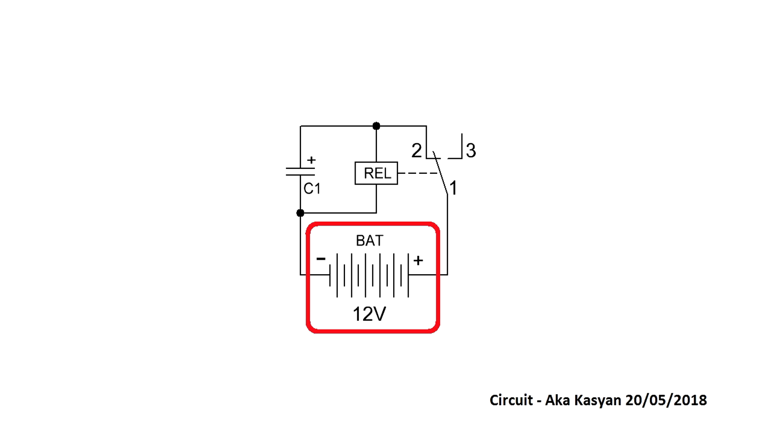Plus of power, for example 12V, through the power contacts of the relay is supplied to the positive pin of the capacitor and simultaneously to the coil. Minus from the power supply comes directly, bypassing the contacts. Initially, before the power is supplied, the relay contacts are closed. As soon as power is supplied, the relay is activated, contacts 1 and 2 will open and contacts 1 and 3 will close.